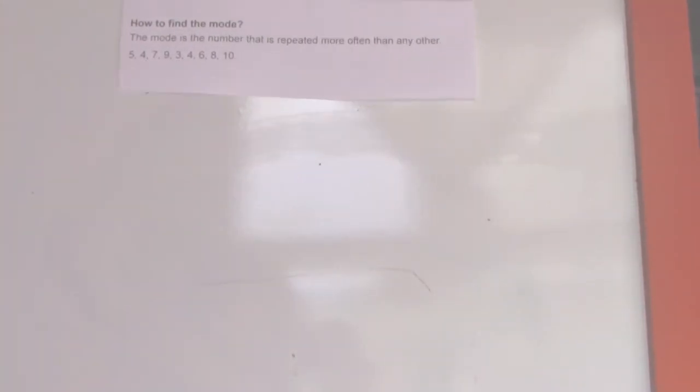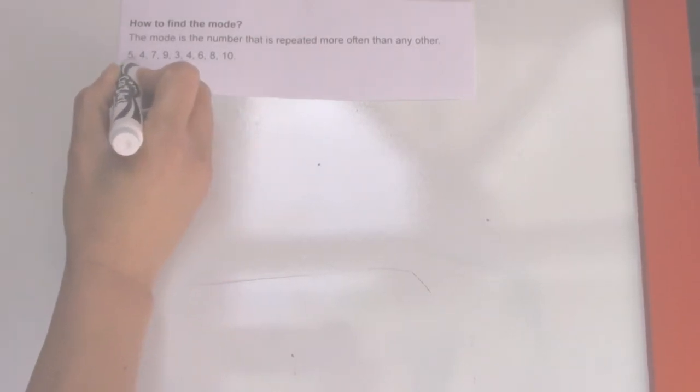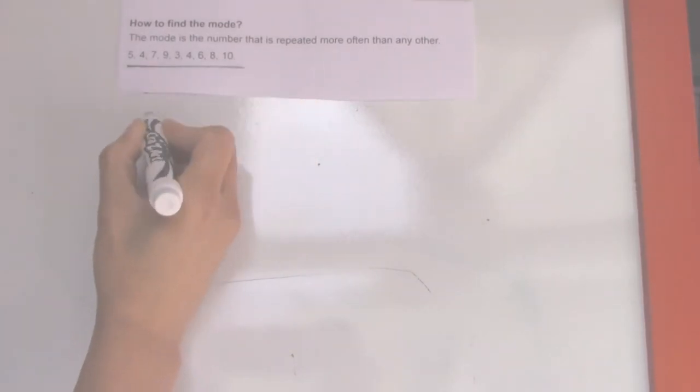How to find the mode? The mode is the number that is repeated more often than any other. So you need to find the number that is repeated. Let's see - 5, there's only one 5. Four, there's two fours, and I think it's only four that is repeated. So the mode of this group of numbers is 4.